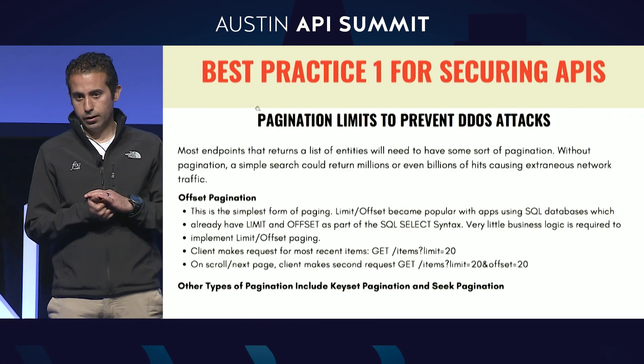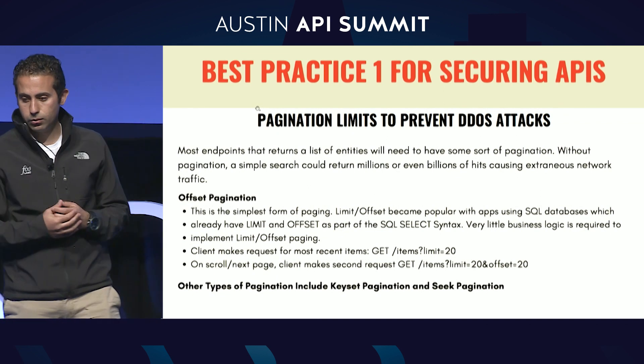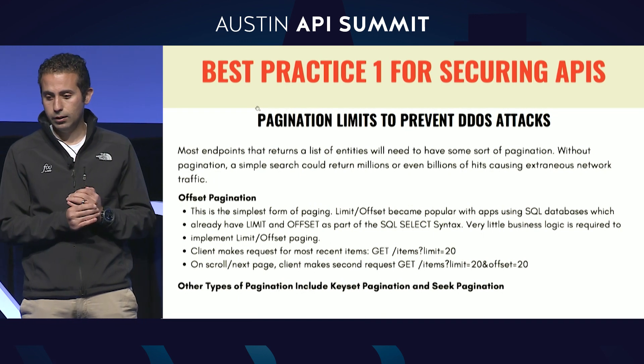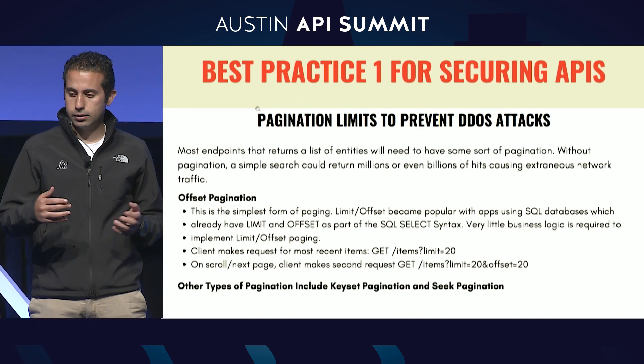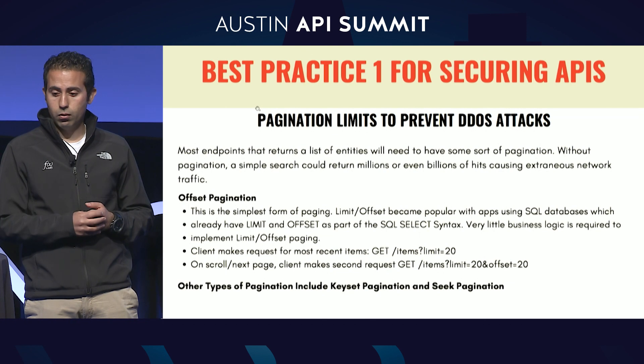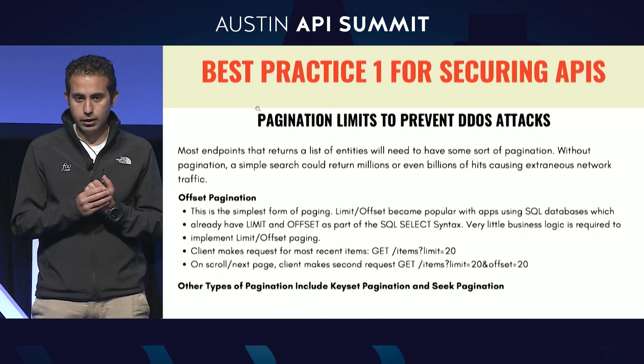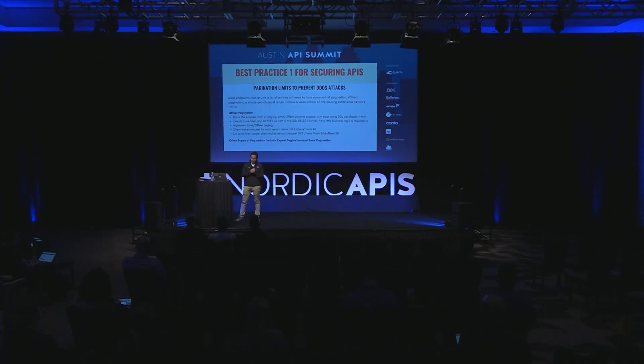The first best practice for denial of service attacks really boils down to pagination — implementing proper pagination in your application. Without proper pagination, a simple search could return millions of hits, causing the network to be overburdened. Offset pagination is one of the more popular types, and most SQL databases support limit and offset as part of their SQL select syntax. If a client wants the first page, it would have limit equals 20; on the second page, it would have a limit and an offset as well. Most importantly, have an upper limit to the number of results that can be returned to prevent such a vulnerability.